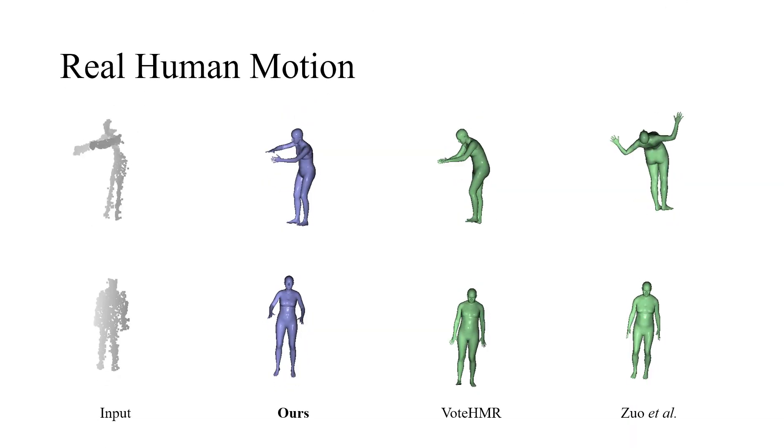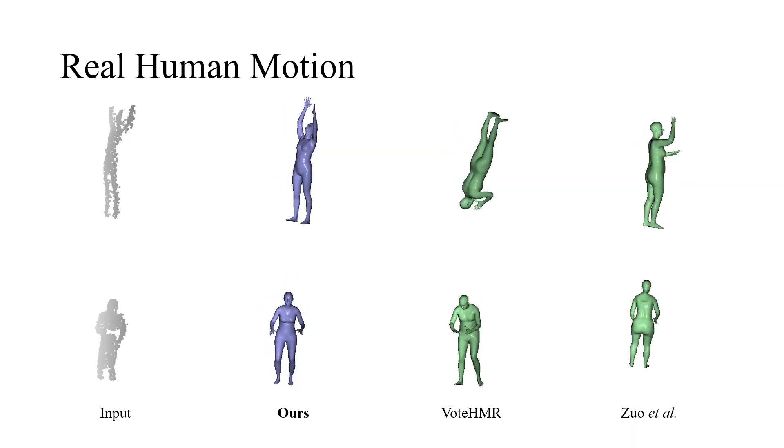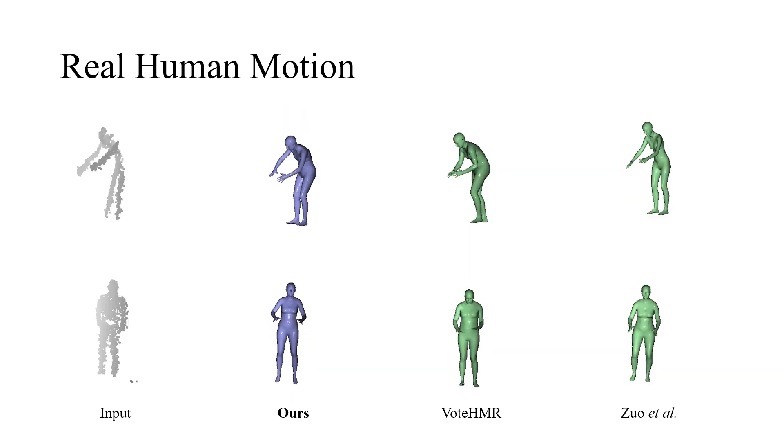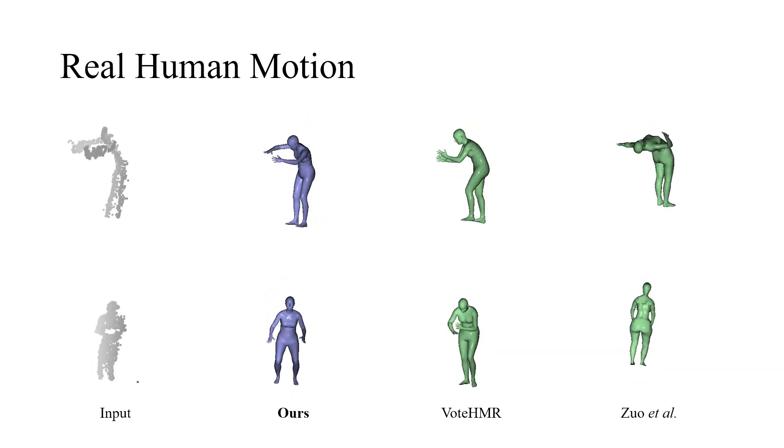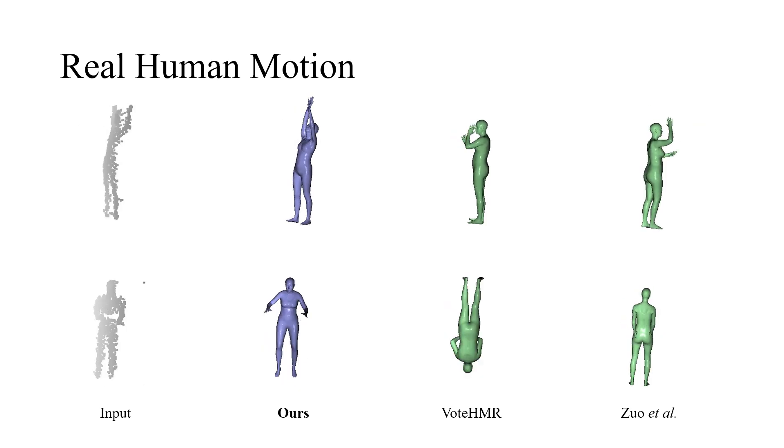The real data additionally contain wiggling noises and flying pixels. Our method nonetheless recovers plausible mesh sequence, whereas baselines fail to generate realistic motion.